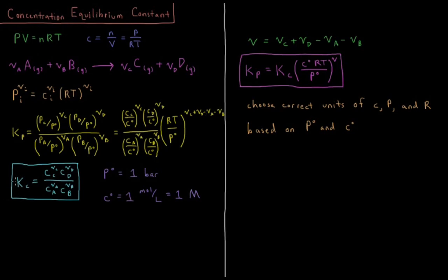Our concentration equilibrium constant Kc, with concentrations expressed in molarity (mol per liter), uses a standard concentration of one mol per liter. This gives us the simplified concentration equilibrium constant: the concentration of products raised to their stoichiometric coefficients divided by the concentration of reactants raised to their stoichiometric coefficients — the same form as Kp but in terms of concentration. To convert between them, we need to know how the number of moles changes during the reaction and apply the RT/P0 conversion.